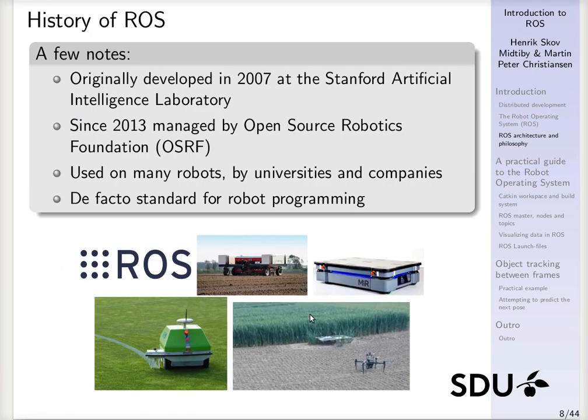Let's talk a bit about the history of ROS because it has a few years behind it. The project started back in 2007 at Stanford, the Artificial Intelligence Laboratory. It has since been taken over by the Open Source Robotics Foundation in 2013, and for many cases it is more or less the de facto standard for robot programming.